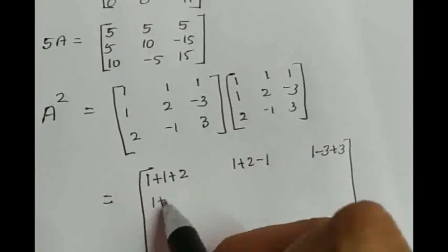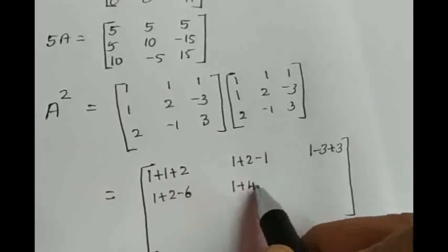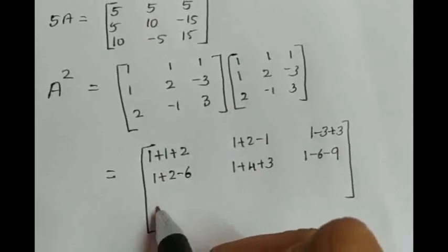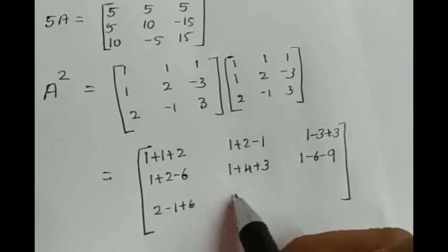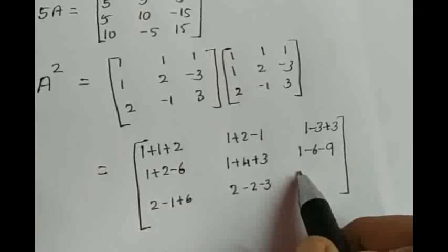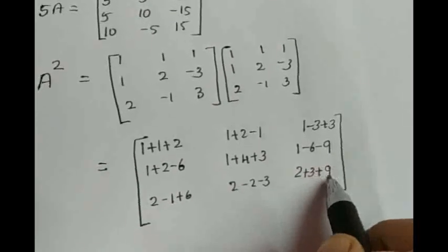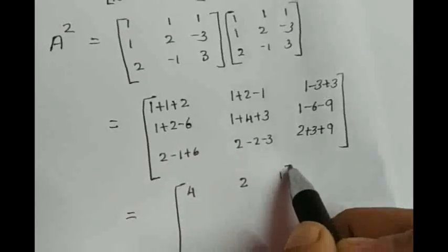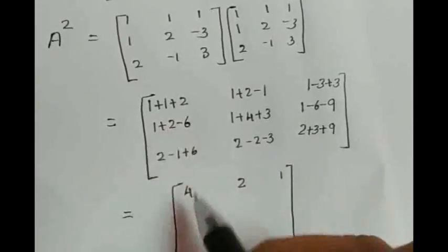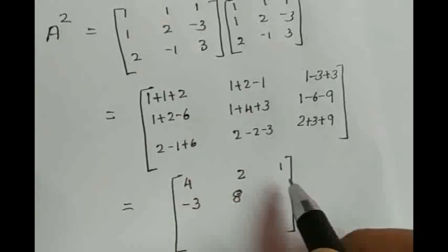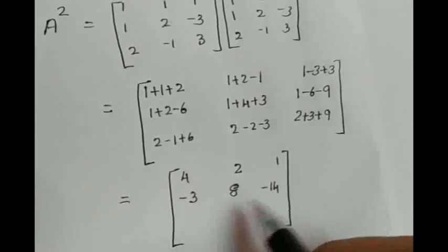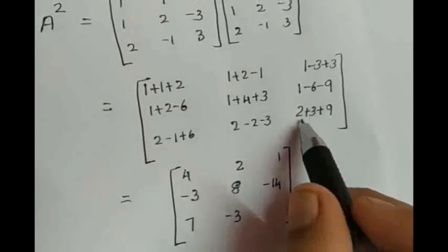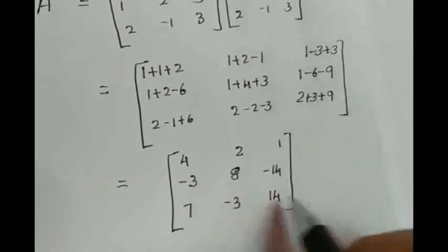Second row: 1 plus 2 minus 6, next element 1 plus 4 plus 3, next element 1 minus 6 minus 9. Third row: 2 minus 1 plus 6, then 2 minus 2 minus 3, last element 2 plus 3 plus 9. So we are getting A square as: 4, 2, 1; minus 3, 8, minus 14; 7, minus 3, 14.